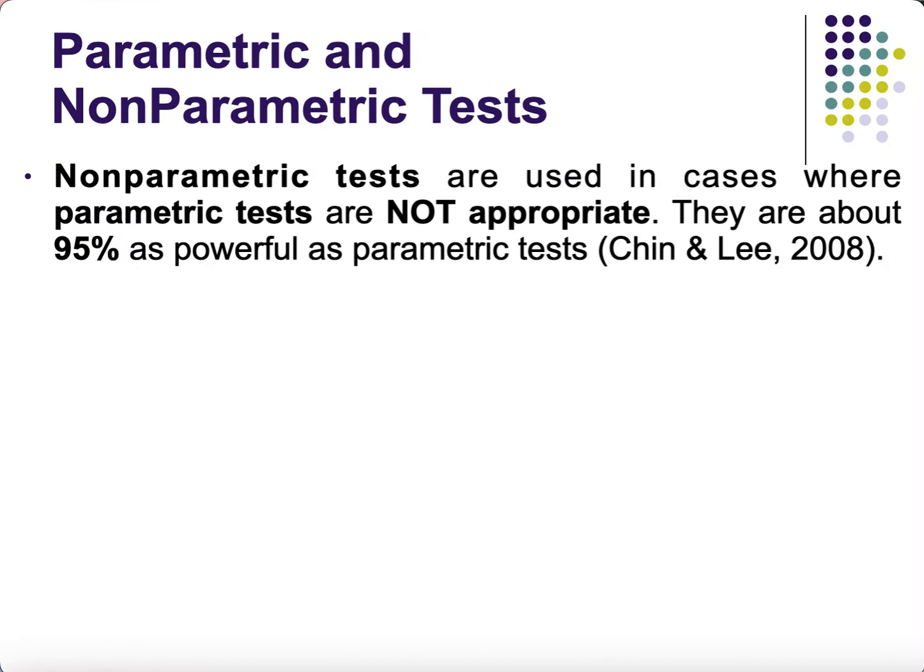Non-parametric tests are used in cases where parametric tests are not applicable. We always want to apply parametric tests first, but if the assumptions are not met, we go to non-parametric tests — they serve as the fallback.